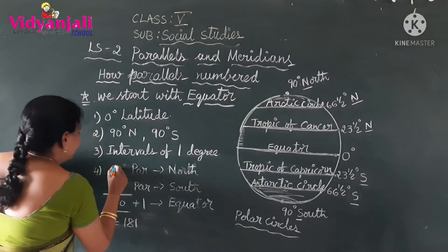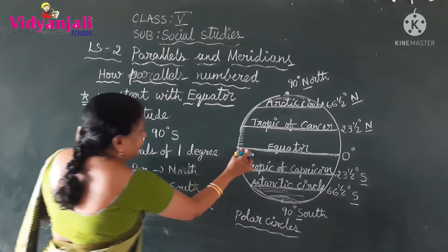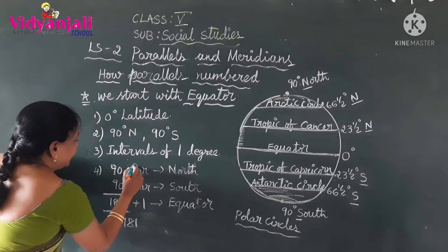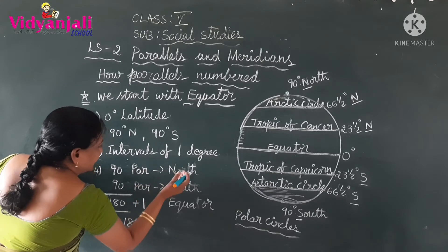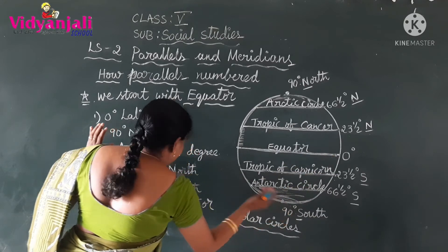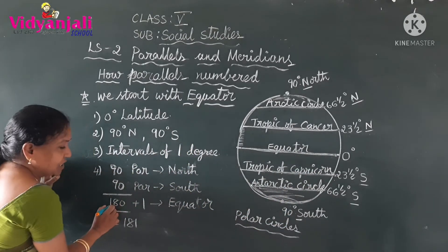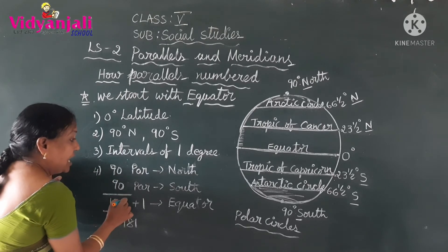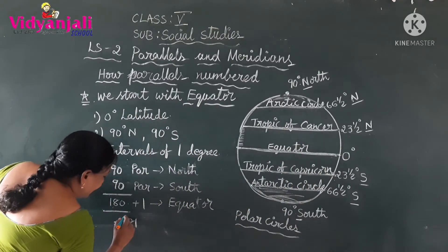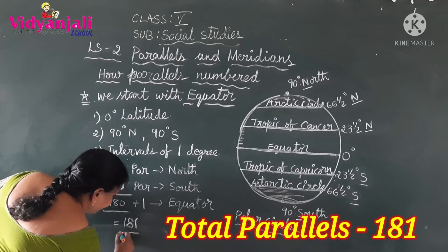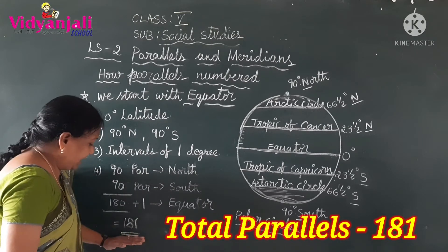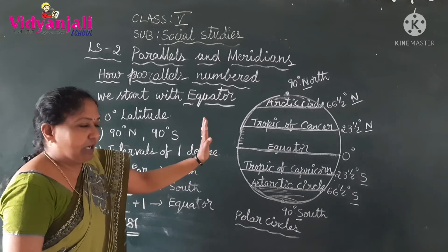In the northern part, from 0 to 90, there are 90 parallels. In the southern part, from 0 to 90, there are also 90 parallels. So the total is 180 parallels. Including the equator, the total number of parallels on the Earth or on the globe is 181.